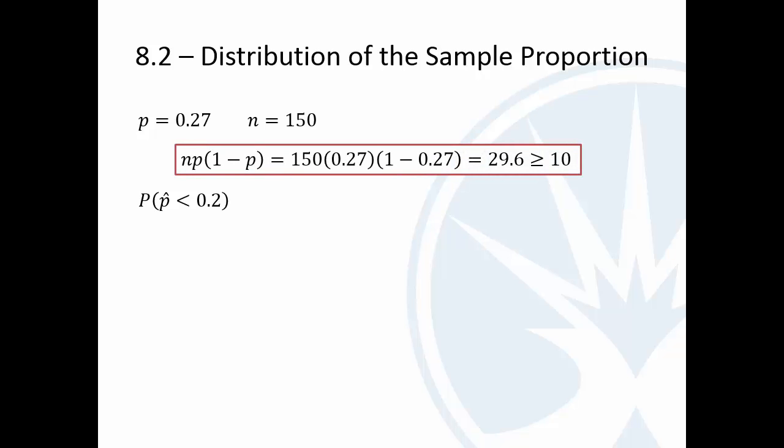So first, let's check to see if we can apply this here. Is n times p times 1 minus p at least 10? So I have n, 150, times p, 0.27, times 1 minus 0.27, and yes, that is at least 10. We also need to have our sample size less than or equal to 5% of the population. There are about 10,000 ECC students, so 150 is definitely less than 5%.